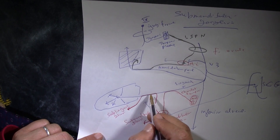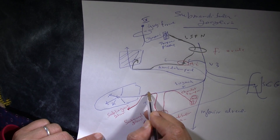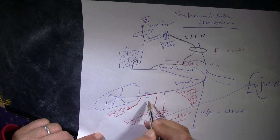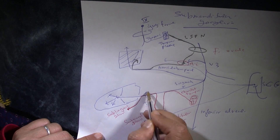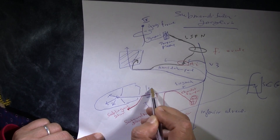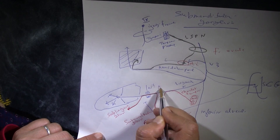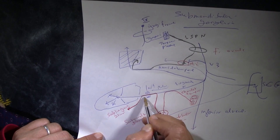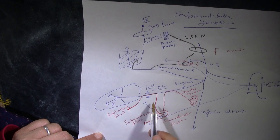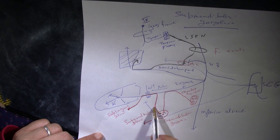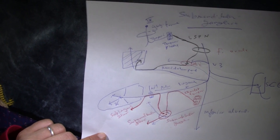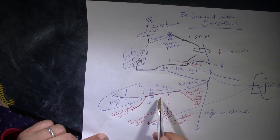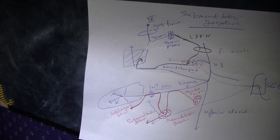Keep in mind that the lingual nerve has a dangerous position related to the last molar — this was covered before. If there is any injury to the lingual nerve, you might also lose the function of the chorda tympani, especially in that location.